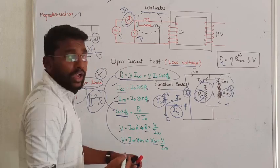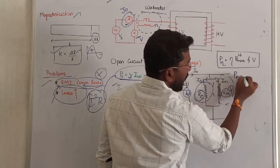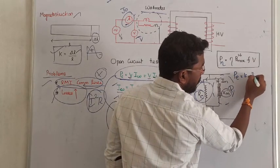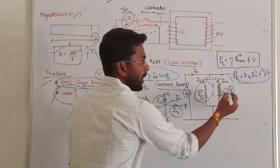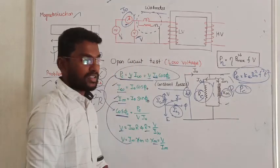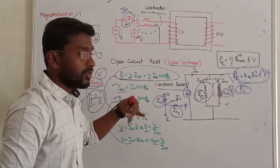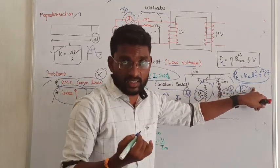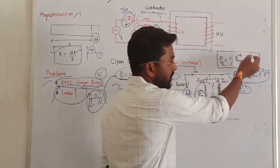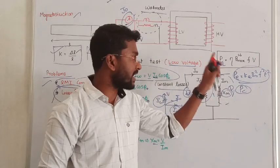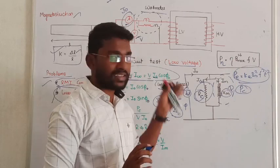That is how we find the no-load losses. The no-load losses include hysteresis loss and eddy current loss. Eddy current loss equals Ke times Bmax-squared times f-squared times t-squared. Adding these two losses gives us the core loss, which is directly obtained from the open circuit test. Remember: if V by f is kept constant, Vm is constant, and the core losses remain constant regardless of winding current changes or power factor changes.